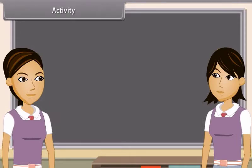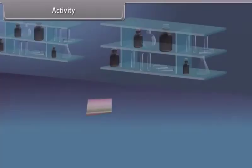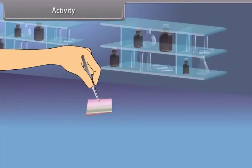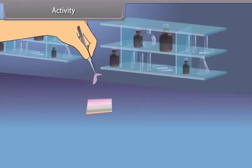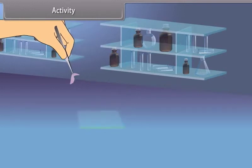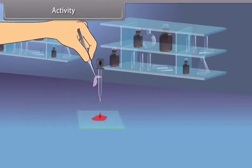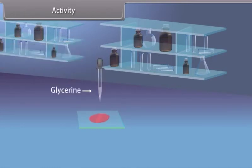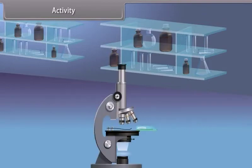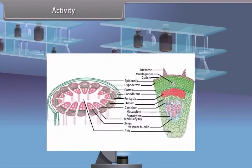We can see by an activity that there are different types of cells in plants. Take a plant stem and cut its thin section. Then stain it with safranin and keep it on a slide with a drop of glycerine and cover it with cover slip. Observe it under microscope. We can see various types of cells and their arrangement.